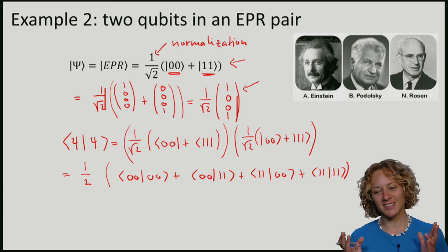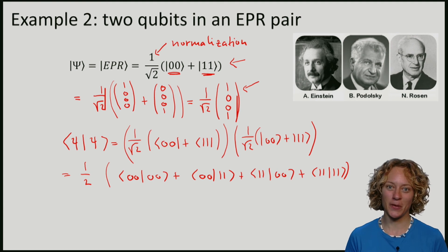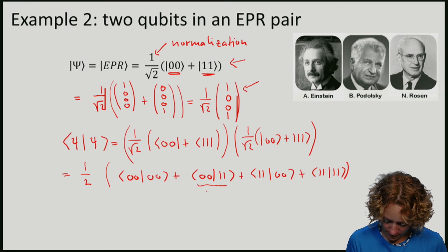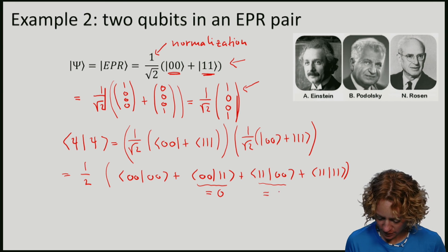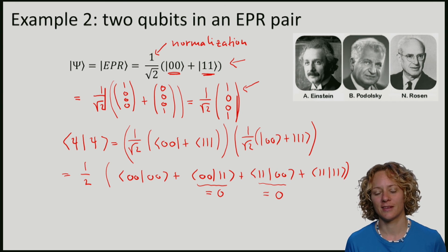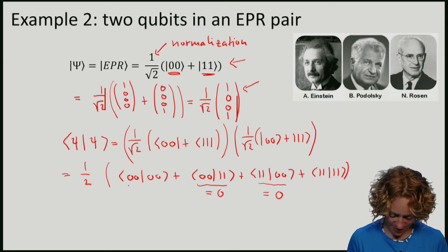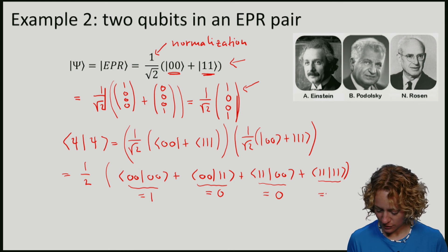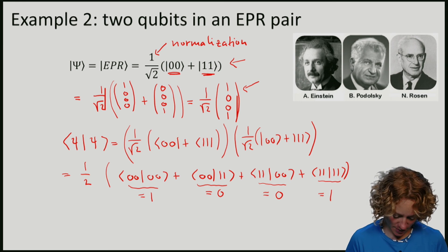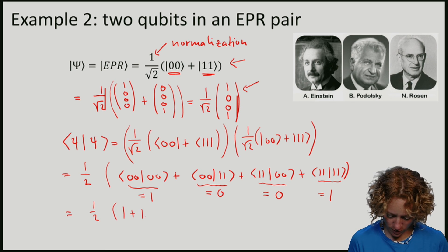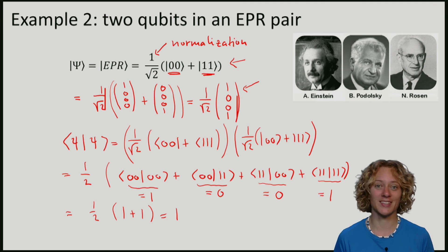So remember that the elements of the standard basis are orthogonal. This means that this term is 0 and this term is also 0. So let's remember that these vectors are also normalized, meaning that the length of this vector is 1, and the length here is also 1. So if I add them up, I have a half, 1 plus 1, which gives me 1. So we see that it's a valid qubit.